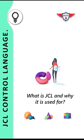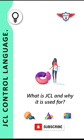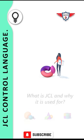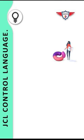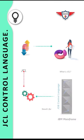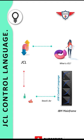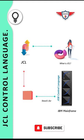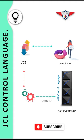Hey guys, welcome back to the session. In this session, we will try to understand what is JCL and why it is used for. The term JCL stands for job control language, and it is the command language of the ZOS operating system.